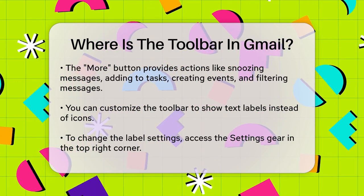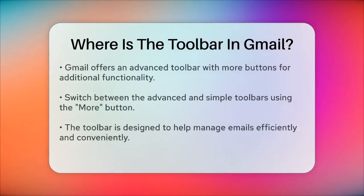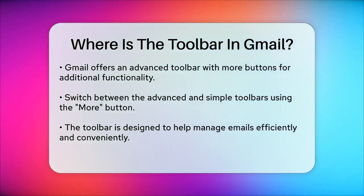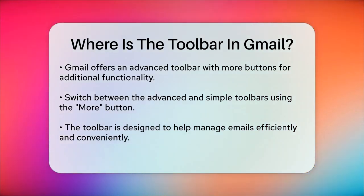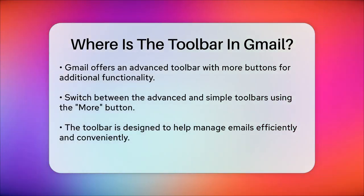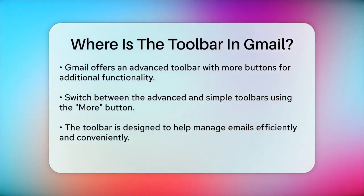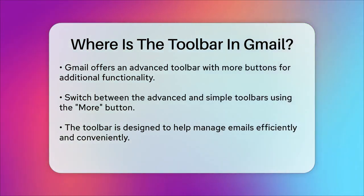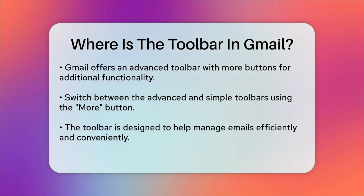Additionally, Gmail offers an advanced toolbar that shows more buttons. To switch to this, click on the More button in the toolbar and select Switch to Advanced Toolbar. If you want to go back to the simple toolbar, just click More again and select Switch to Simple Toolbar.